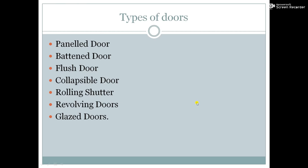Good morning students. Today we are going to learn about the types of doors, the windows, and the types of windows. There are 7 types of doors which we are going to see: the panel door, batten door, flush door, collapsible door, rolling shutters, revolving door, and glazed door.